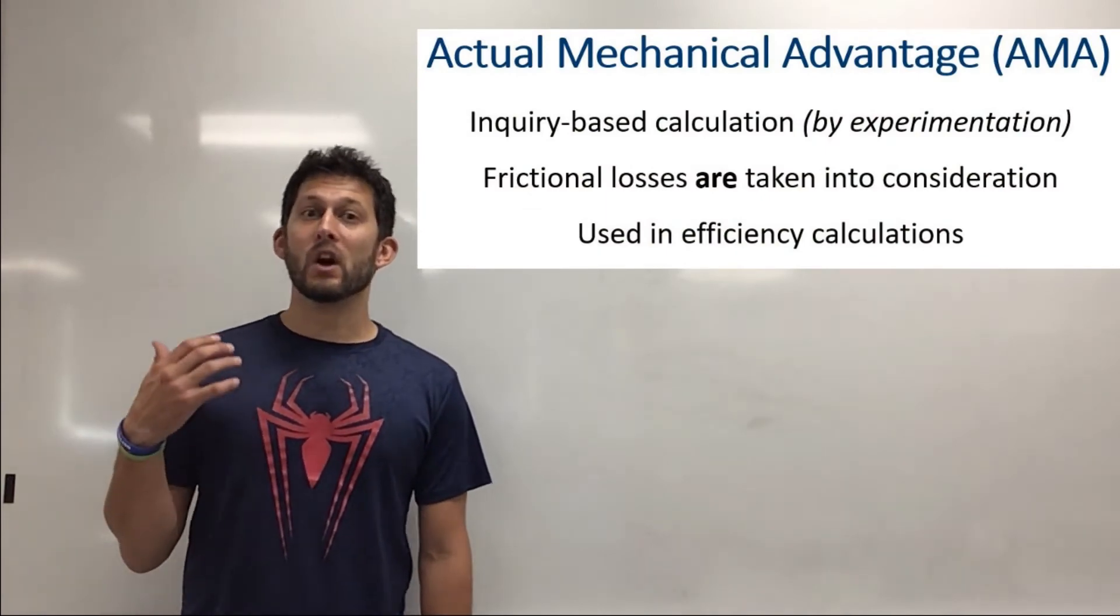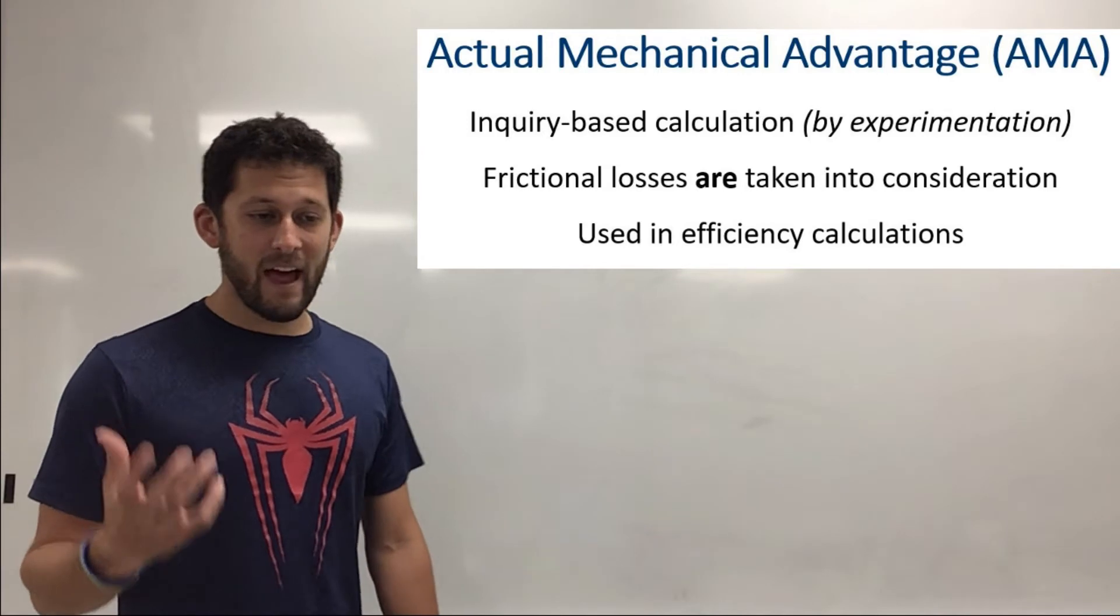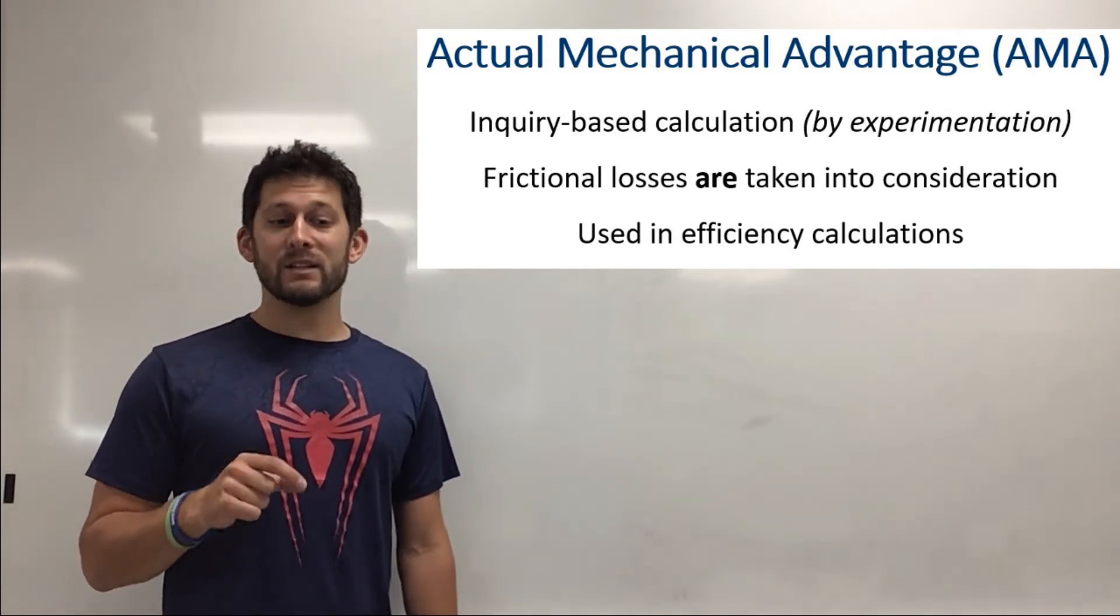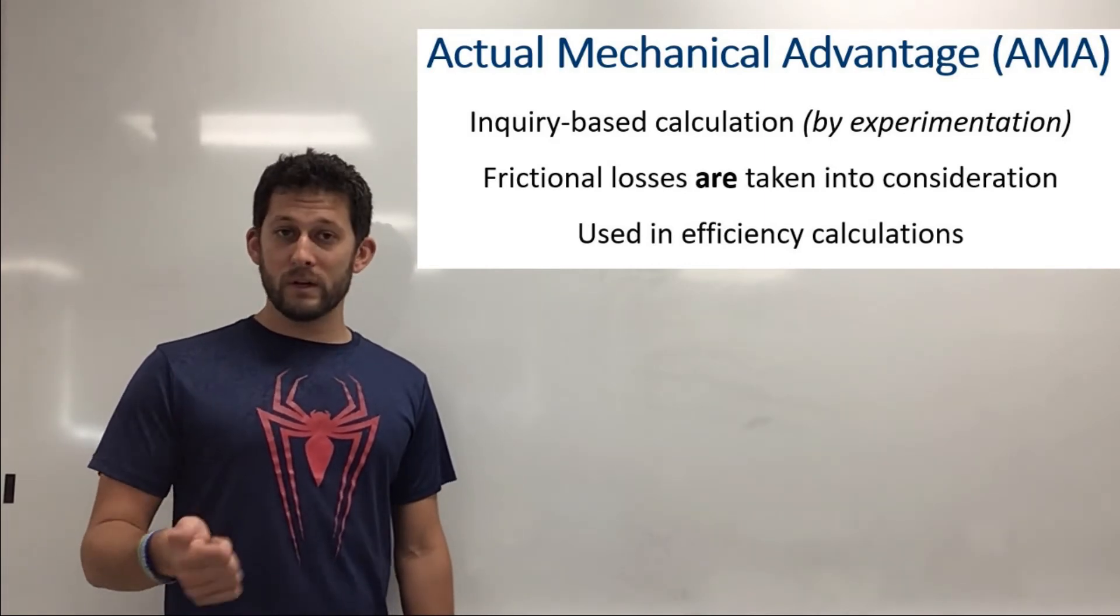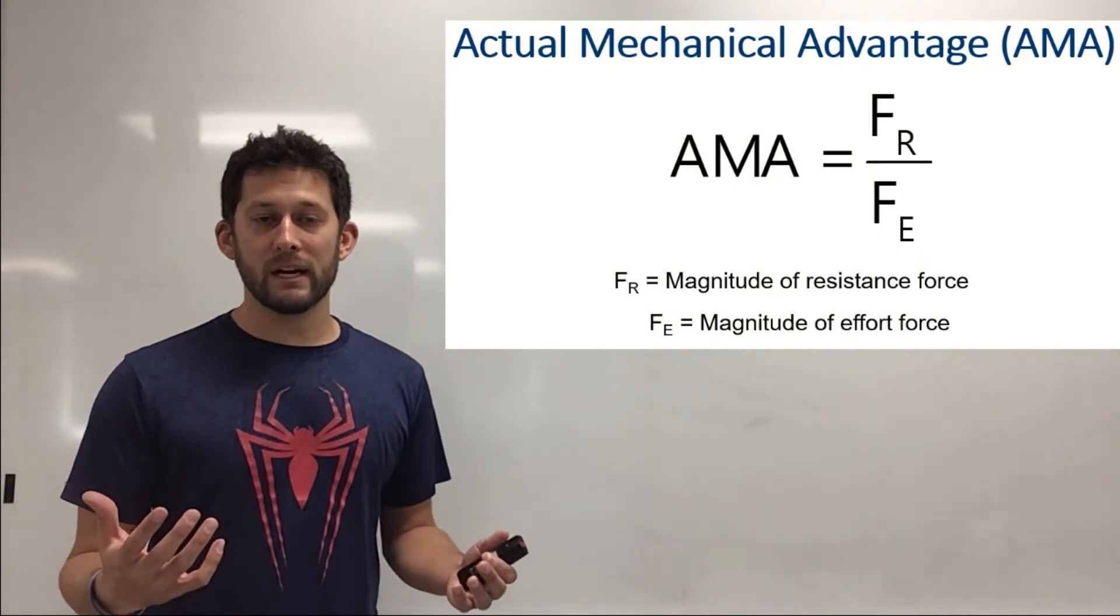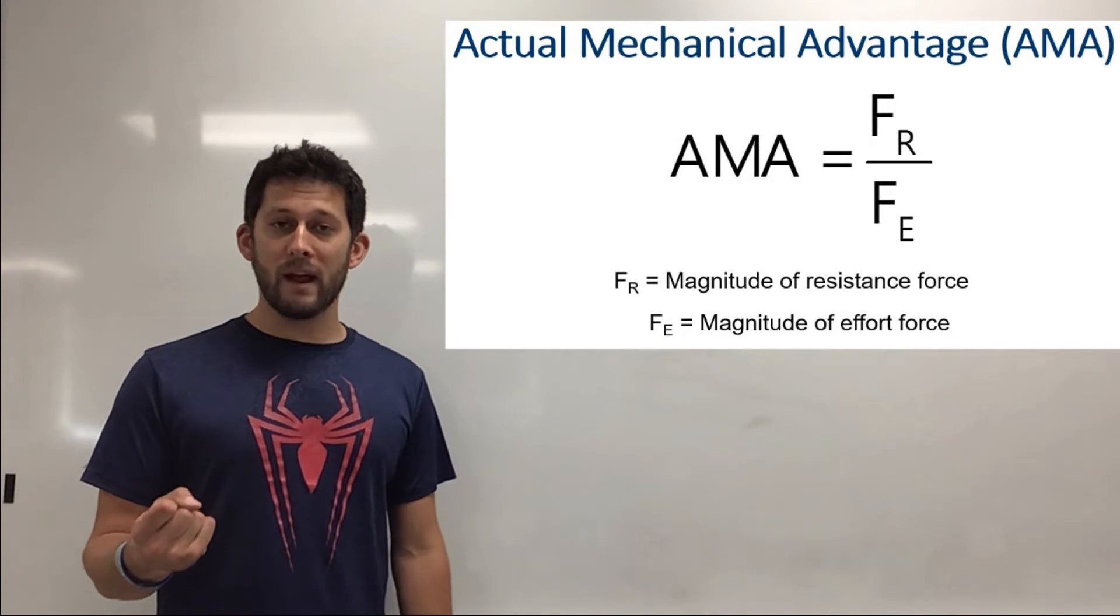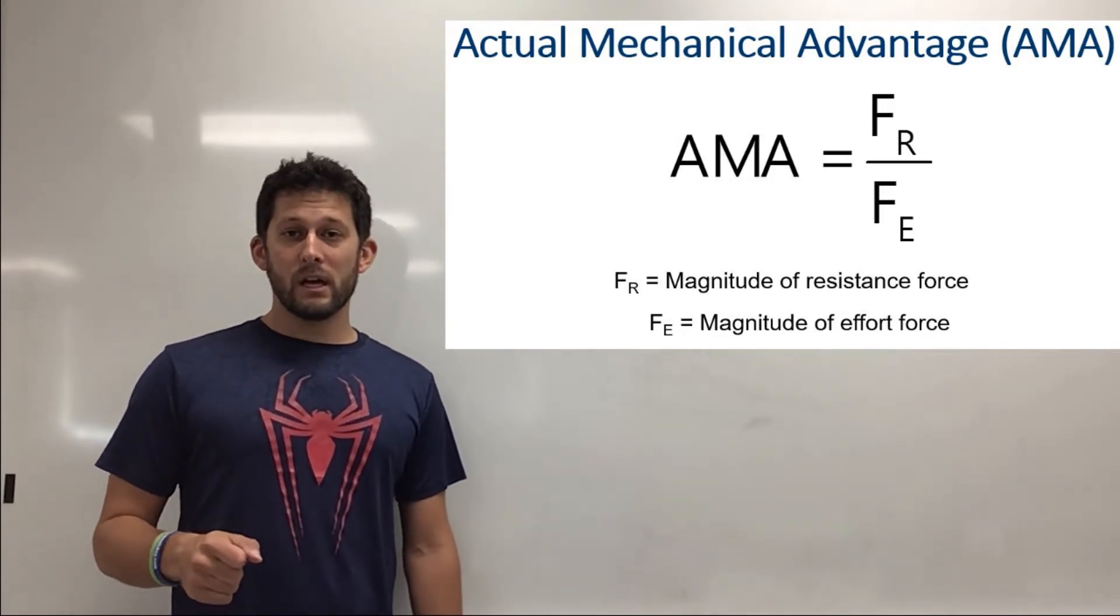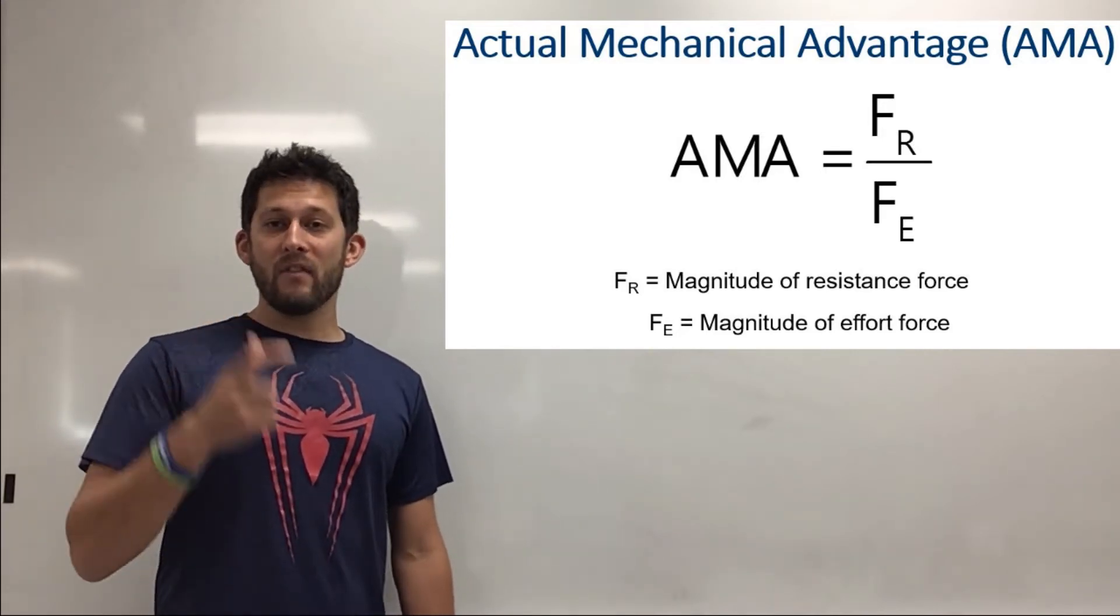So actual mechanical advantage is something that you're going to actually have to dig into and experiment and collect that information. So that is when friction is taken into account and the way that we do that is measure the effort force and the resistance force. So if I'm trying to lift a hundred pound object, that is my resistance force and the amount of force I need to put in is my effort force. So your actual mechanical advantage is going to be a ratio between the resistance force and the effort force.